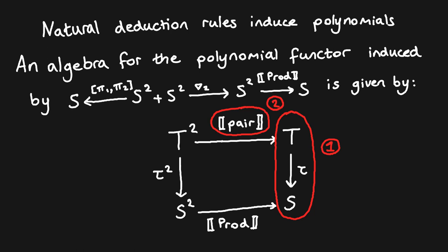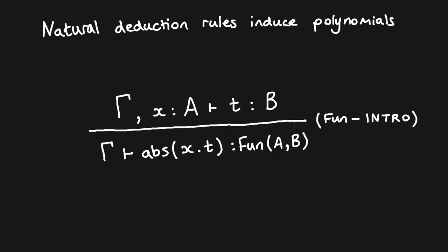Let's see one more example to gain a little more intuition for the construction. Here we have a second example of a natural deduction rule in the simply typed lambda calculus, corresponding to function introduction or lambda abstraction. Crucially, this one is different because it is a binding operator — the lambda abstraction operator takes some term in an extended context and binds the extending variable. We are going to see how this, too, induces a polynomial.